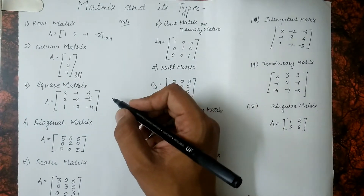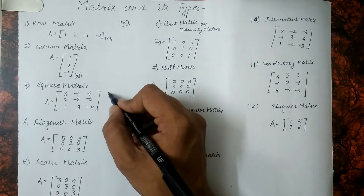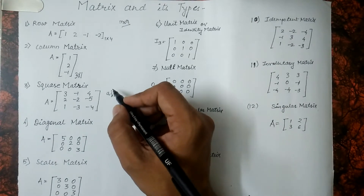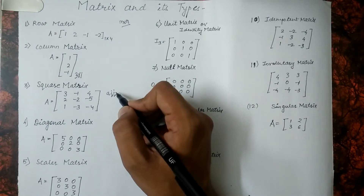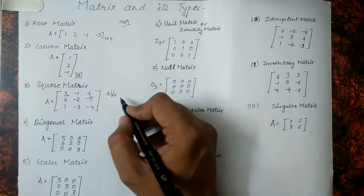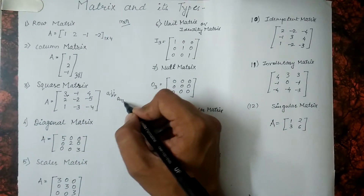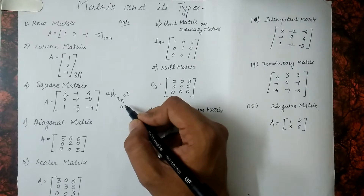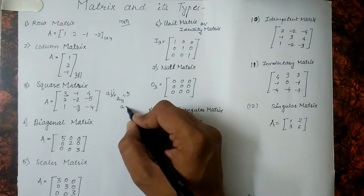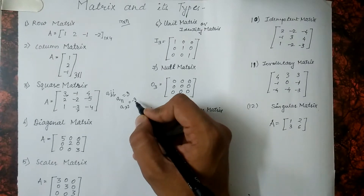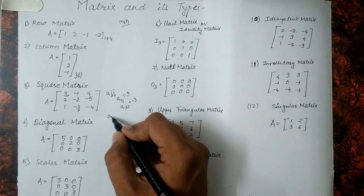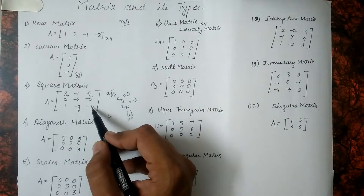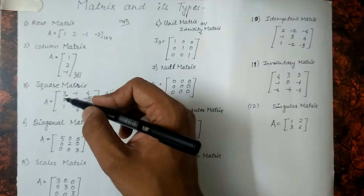Now, how we represent the values — we use a of ij, where i and j are in suffix. Here i describes the position of the row and j the column number. For example, if we consider element 3, its position would be a11. A11 shows 3. The elements in which the value of i and j are equal — that is 1,1; 2,2; 3,3 — these elements are called the elements of the leading diagonal.